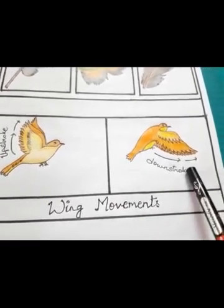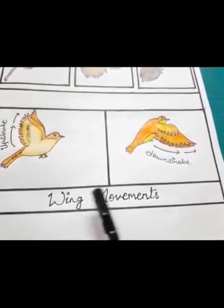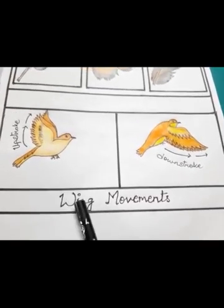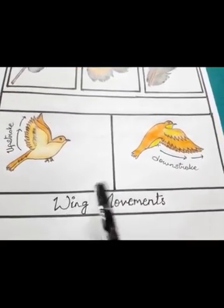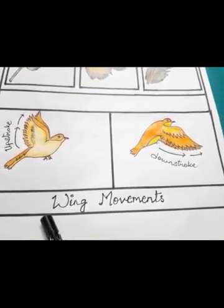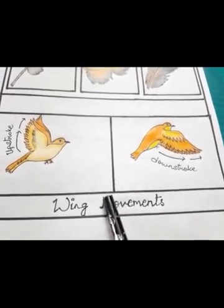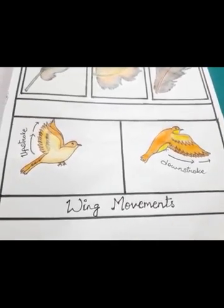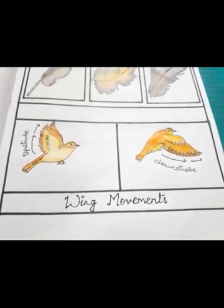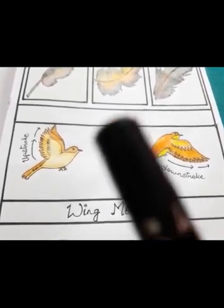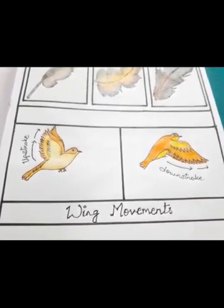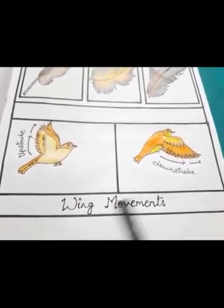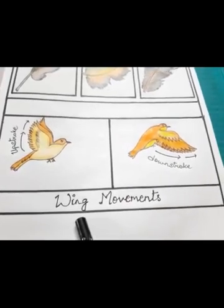Some birds like peacocks and hens can only fly short distances. Whereas birds like pigeons fly longer distances at low heights. Some birds like eagles and kites fly very high in the sky — they may look tiny from the ground, but that's only because they are flying so high. So different birds fly differently.